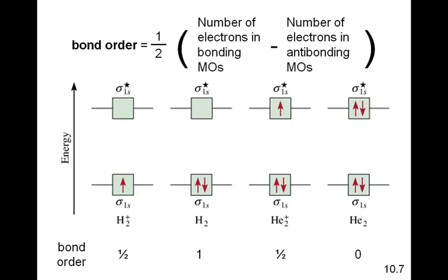Here are the bond orders for these four different molecules. The H2 molecule we know exists, and we see that its bond order is one. Whenever you have a bond order that's greater than zero, that molecule is capable of existing — it would be a stable molecule. The He2 molecule has a bond order of zero, and therefore the bonds are unstable, and this molecule would not exist. Basically, you would think it is impossible to have an He2 molecule, and no He2 molecules have ever been discovered.